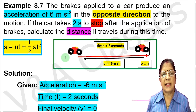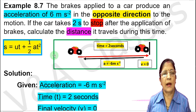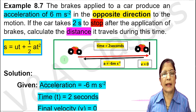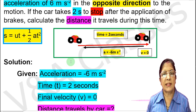We have to calculate the distance the car travels. For the distance, we have the formula S equals ut plus half at squared. But we do not know the initial velocity of the car, so we will do this numerical in two steps: first, find the initial velocity of the car, then calculate the distance.